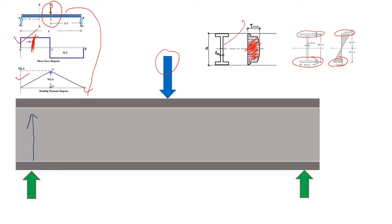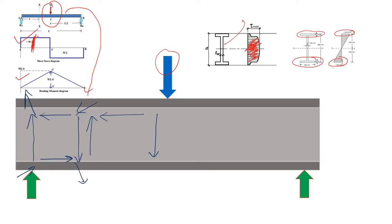This is the shear force, and this is the balancing force. You will also have some complementary shear force acting perpendicular to it. This results in a resultant tensile force. The same thing happens for the adjacent zone: you get the shear force, the balancing force, the complementary force, and the resultant tensile and compressive forces.